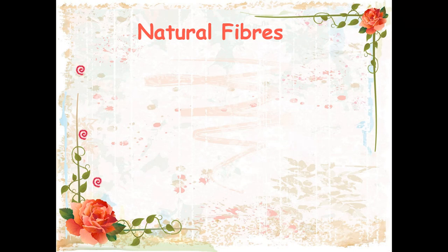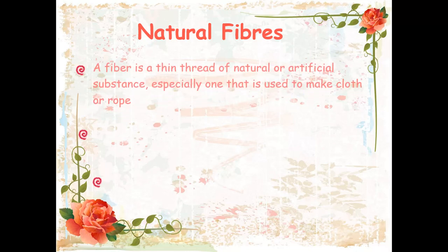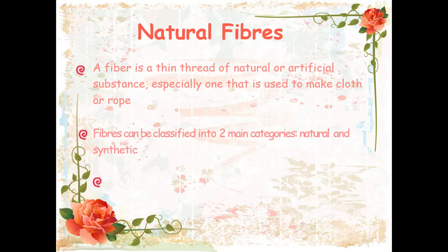First we have to think about the fibers. What are the natural fibers, so that we can understand what are the synthetic fibers. A fiber is a thin thread of natural or artificial substance, especially one that is used to make cloth or rope. Fibers can be classified into two main categories: natural and synthetic.